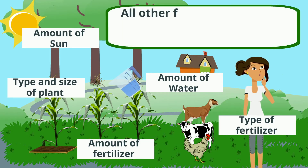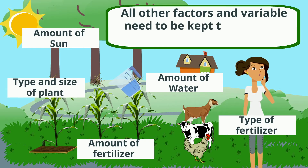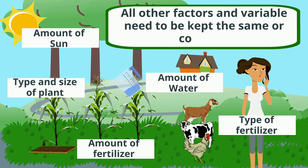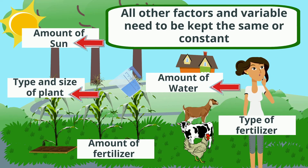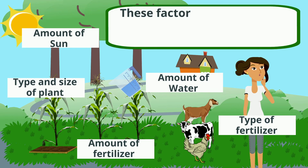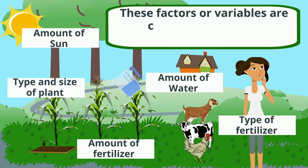All other factors and variables need to be kept the same, or constant: same amount of sun, same type and size of plant, same amount of water, and same amount of fertilizer. These factors or variables are called controls.